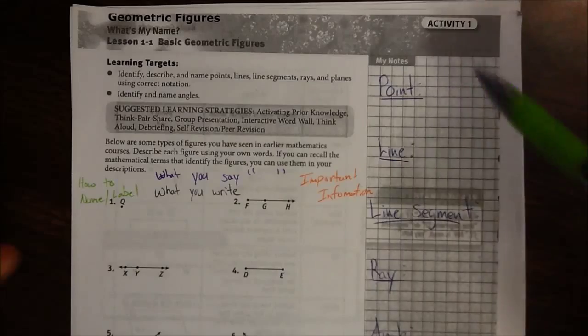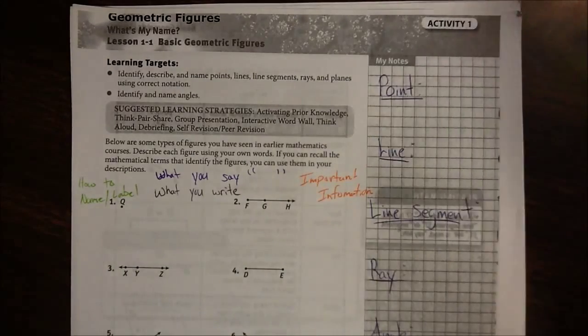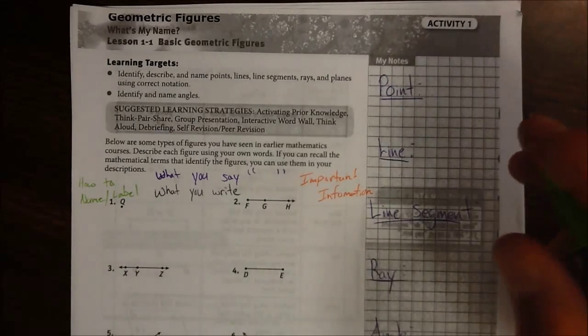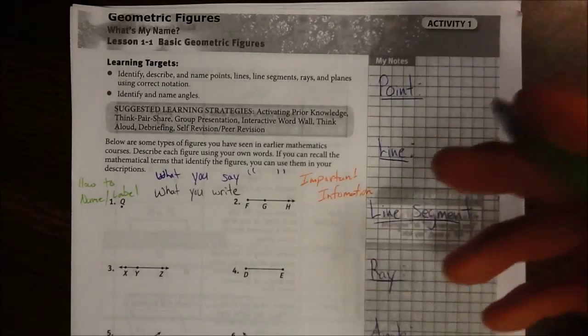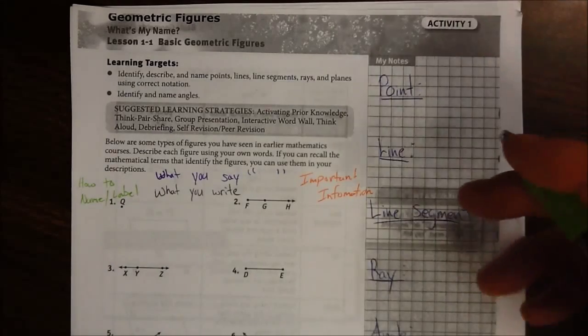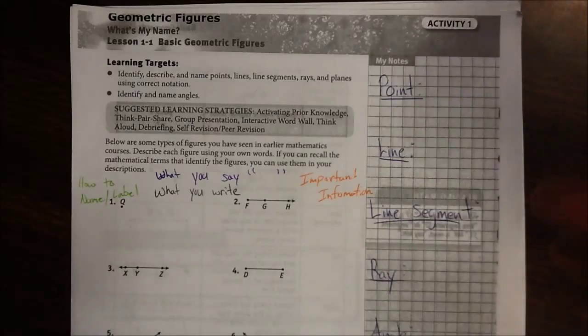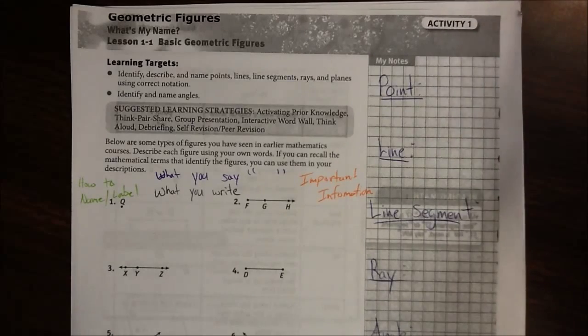So when you identify, you just say like, hey, there's a ray, hey, there's a line, so on and so forth. But describe is tell me the characteristics, what does an angle consist of, how many endpoints does a line segment have, so on and so forth. So you need to be able to describe it and also name it.